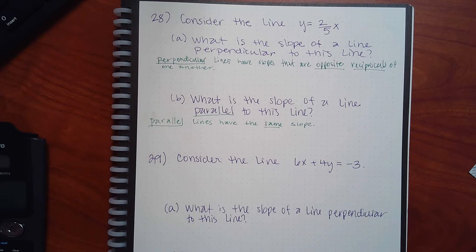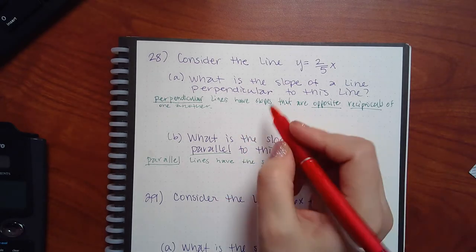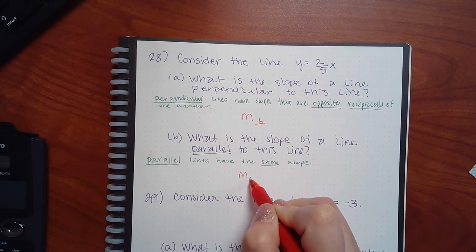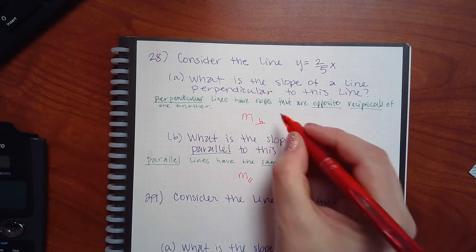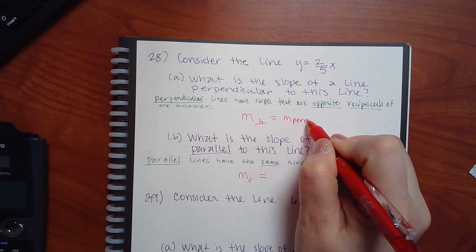If there's no fraction, you have to make one and then flip it. For example, if the slope is 3, you write it as 3 over 1, then flip it to get 1 over 3. For notation, the perpendicular symbol means perpendicular and the parallel symbol means parallel — you don't have to write them that way, but use some kind of indicator to keep track of which is which.